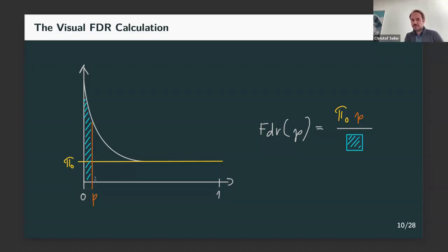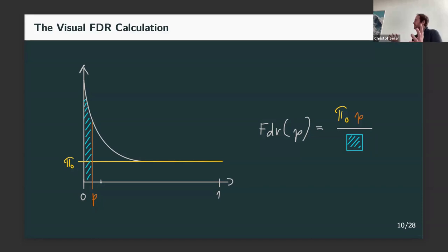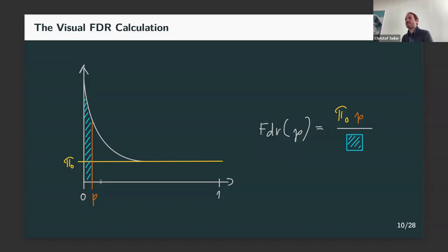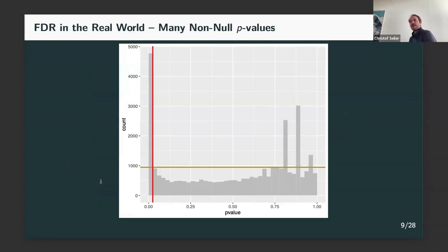If you move P around, the false discovery rate will change. It's a quantity that is specific for a set - you're not declaring one specific hypothesis as interesting or not interesting. You always have a set of P-values that, as a collective, you say this is interesting with some false discovery rate. So it's always about sets, not individual P-values or hypotheses. You need to have a lot of experiments each producing a P-value. In the old fashioned way with just one hypothesis, you run the experiment, you get one P-value, and you cannot do anything. You need to be able to construct a histogram, and you can only do that if you have many, many P-values - the more you have, the better you can estimate the uniform distribution and the false discovery rate.